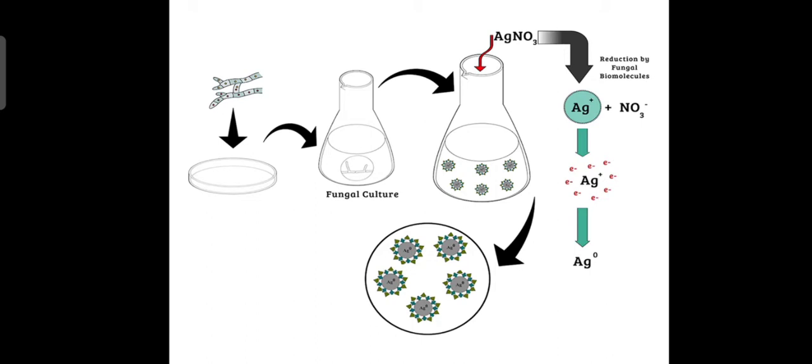There are so many biological systems using which nanoparticles can be produced. In most cases, why fungi is used is fungi are attractive agents for biogenic synthesis of silver nanoparticles as they have high tolerance to metals and also easy to handle. They also excrete large quantities of extracellular proteins. In these cases, you can see that from the soil we have isolated the fungal culture.